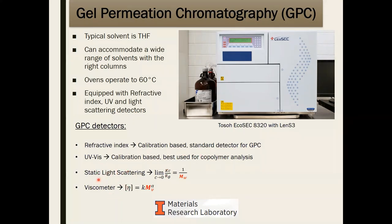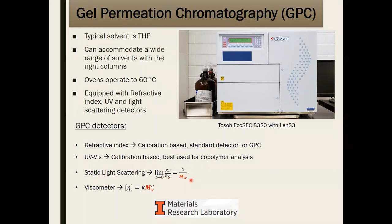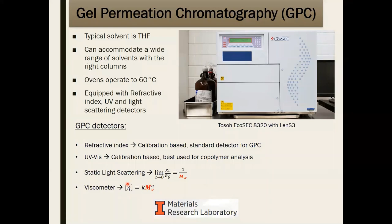That's why we have the light scattering detector and the viscometer. For light scattering, the molecular weight is directly related to the Rayleigh ratio, which is related to the intensity of scattered light. Once your polymer reaches the detector, it scatters light, and that amount of scattering is directly related to molecular weight — no calibration needed. For the viscometer, the intrinsic viscosity of the solution is directly related to molecular weight via the Mark-Houwink parameters k and a, which for many polymers can be looked up in reference books.